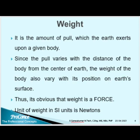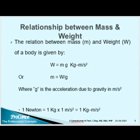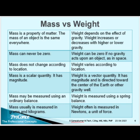The unit of weight in SI units is Newtons. Now the relationship between mass and weight: the relationship is given by W equals Mg, where M is mass and G is the acceleration due to gravity in meters per second squared. So M can also be written as W divided by G. 1 Newton can be written as 1 kg multiplied by 1 meter per second squared.